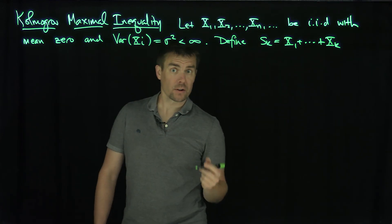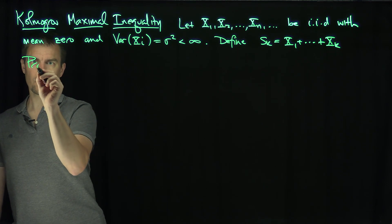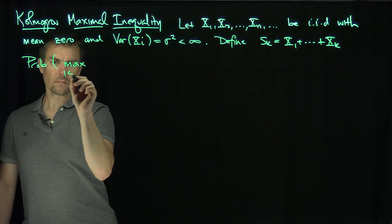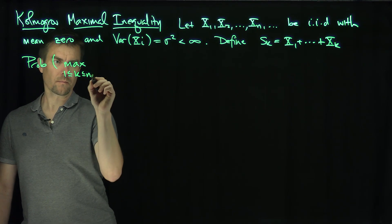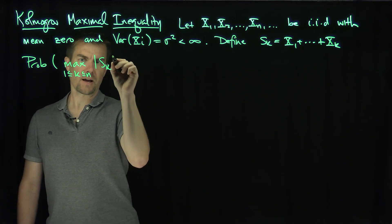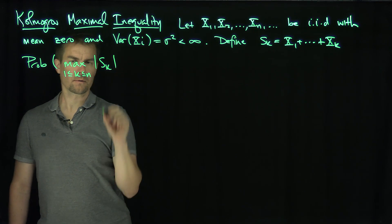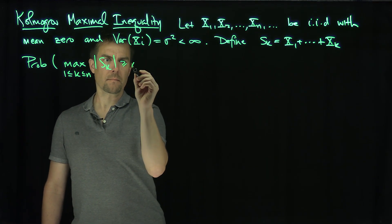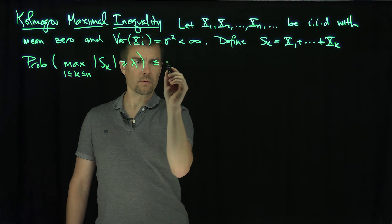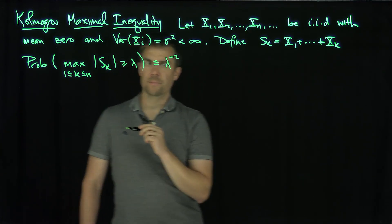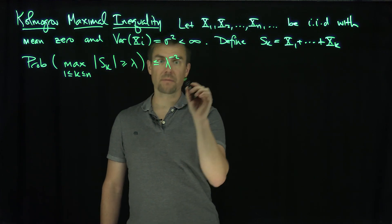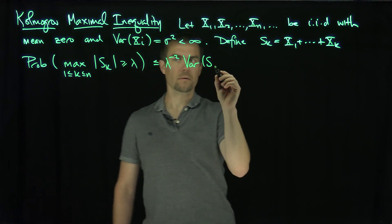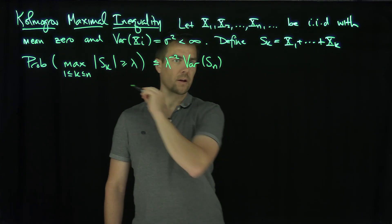Then we give the following inequality: the probability that the maximum of sk is bigger than lambda is less than or equal to lambda to the negative 2 times the variance of sn.